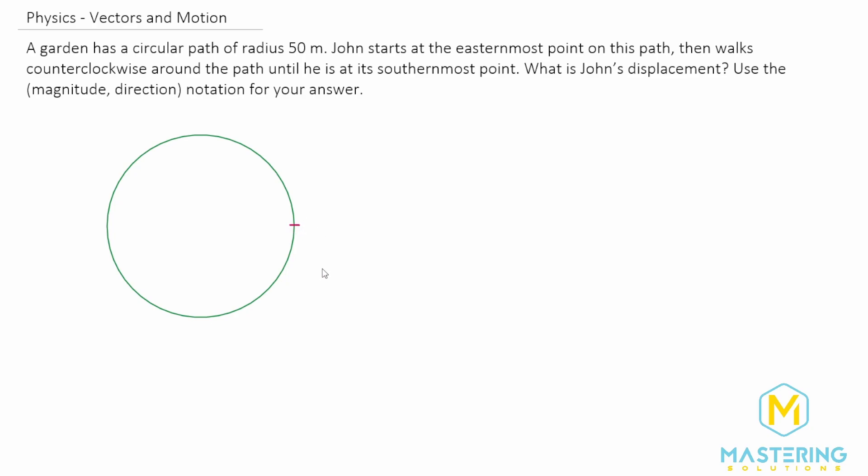So easternmost will be right here and then he walks counterclockwise around the path. So he goes this way and he goes all the way around until he's at the southernmost point right here. And they say what is John's displacement?